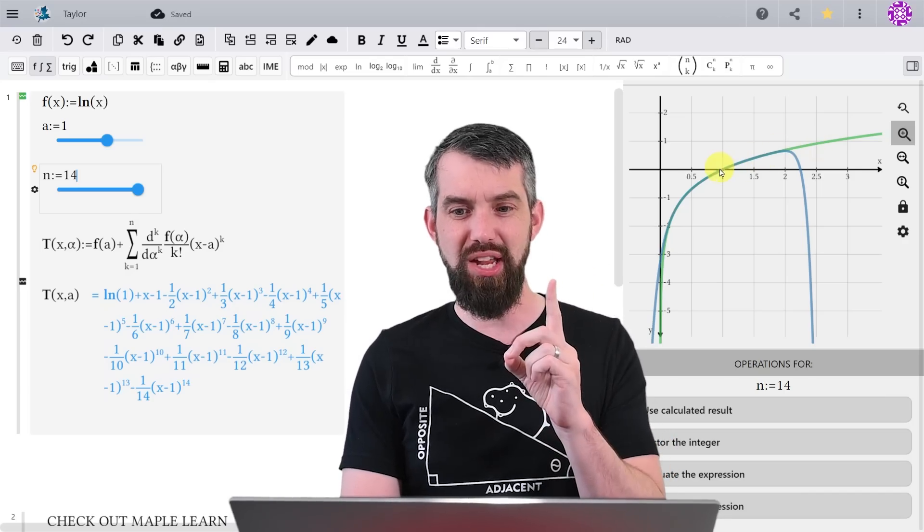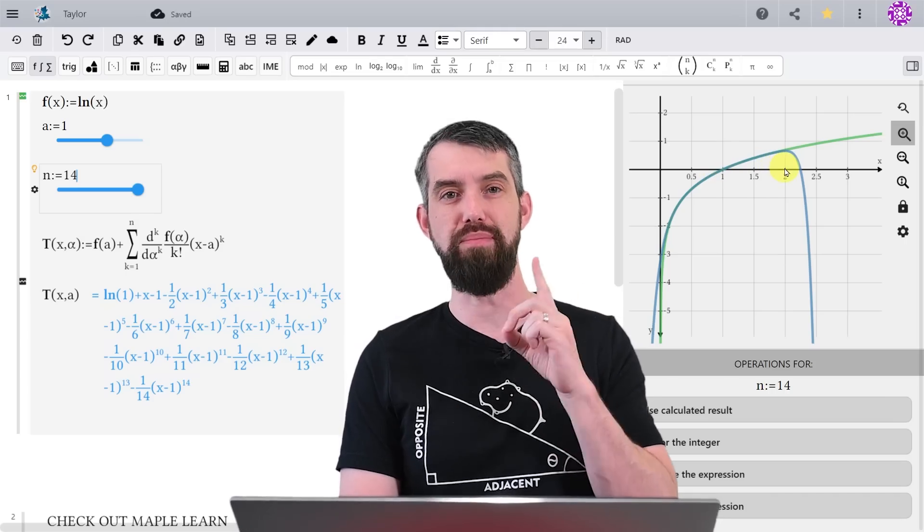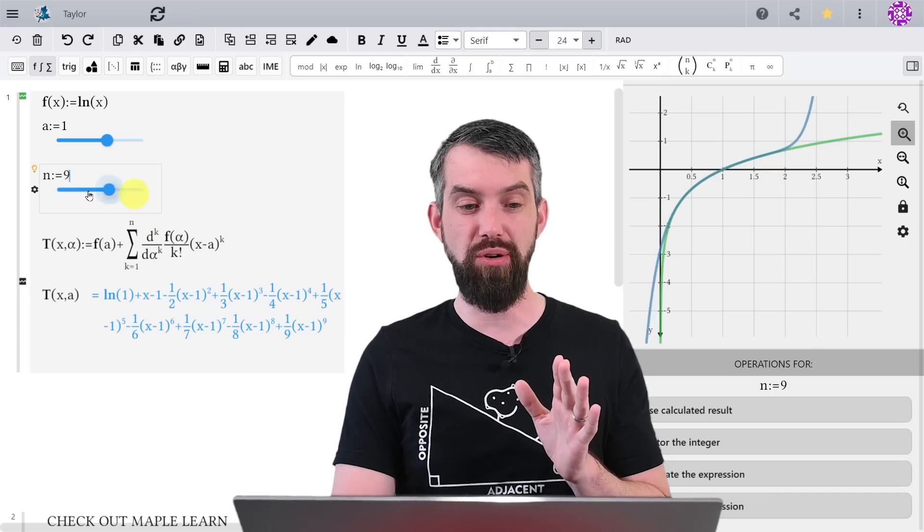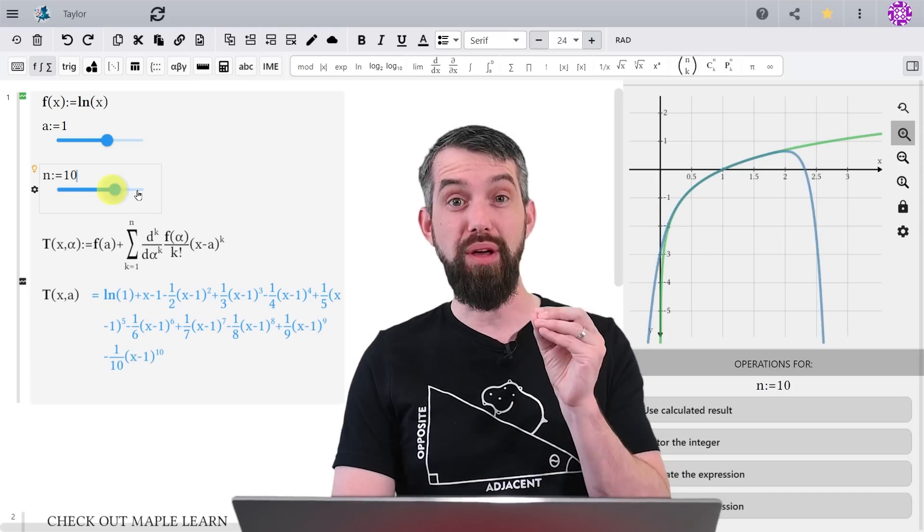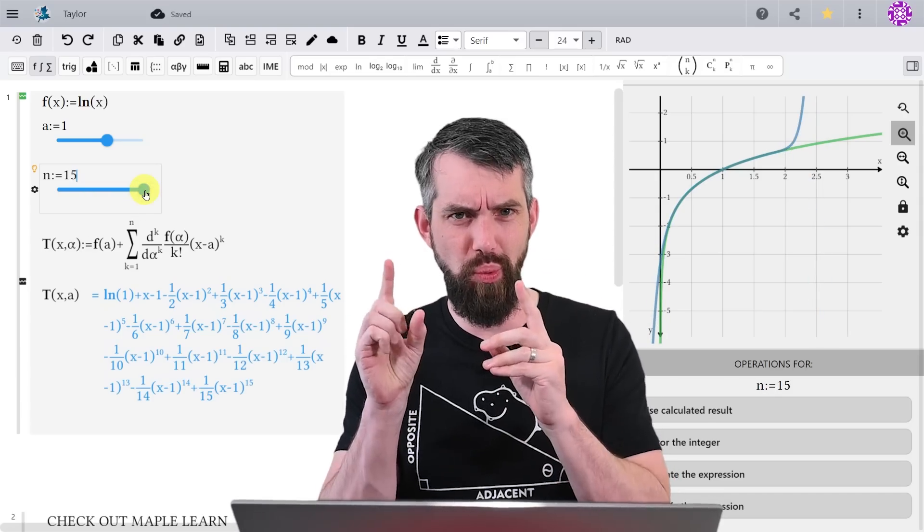And it's relevant here that 1 is 1 unit away from 0, but 1 is also 1 unit away from 2. And the point is that it doesn't actually matter how many terms I have here, all of them are going to be bad after the value of 2. So what's going on here?